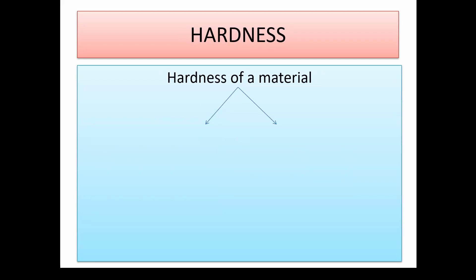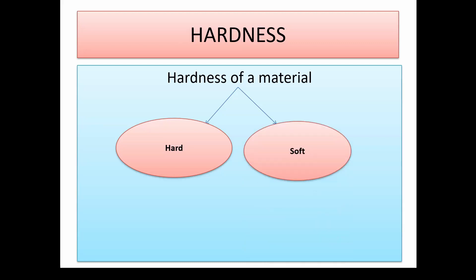Materials can also be classified based on hardness into two categories: hard and soft. Hard materials are those that are difficult to compress — when you press them, it is difficult to compress them. Soft materials are the opposite — materials that can be compressed easily. Examples of hard materials are stone, steel, and diamond. The hardest known substance found in nature is diamond. A soft material could be cotton or foam.